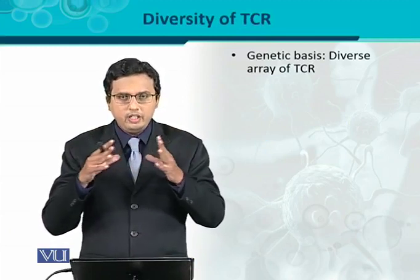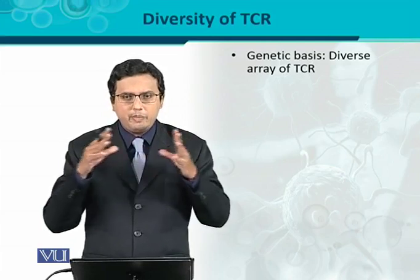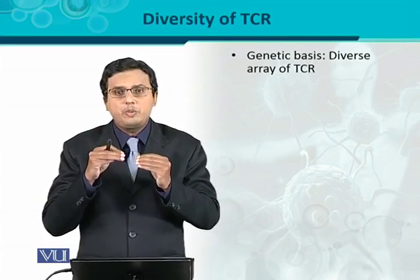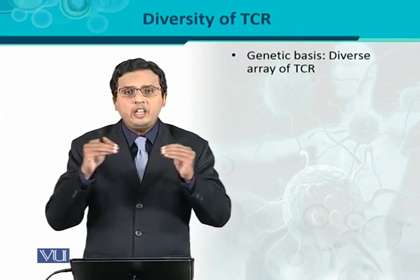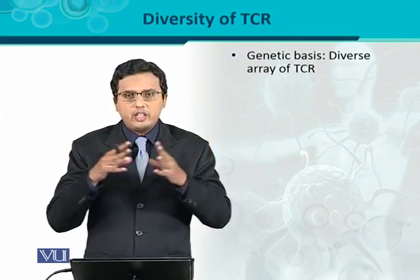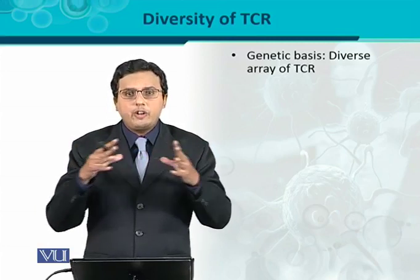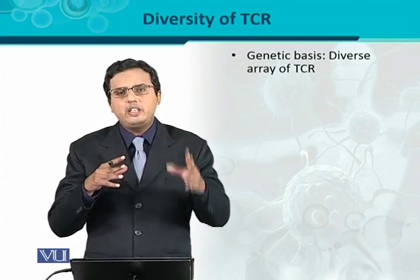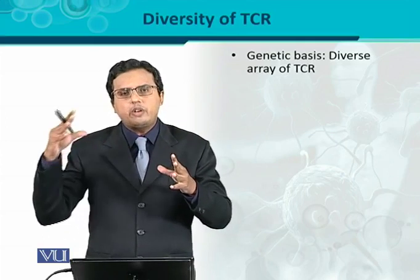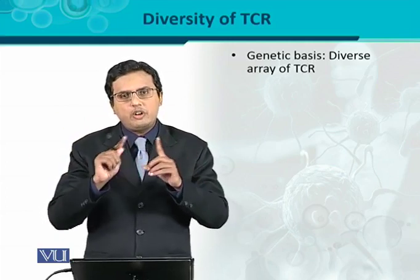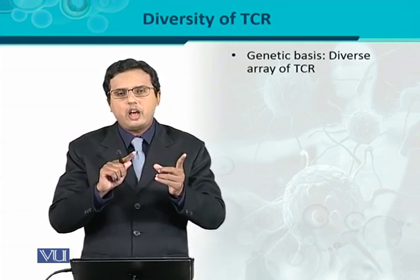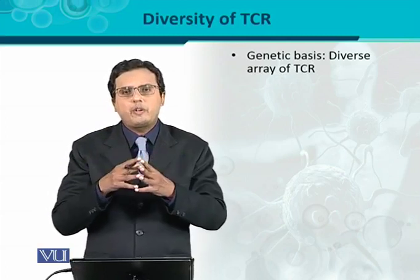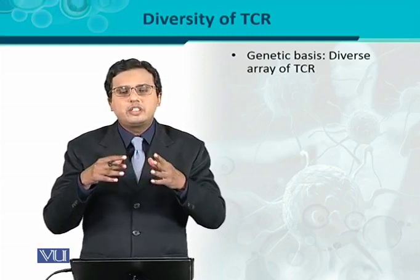Same like the immunoglobulin, in the case of TCR, the joining of various gene segments determines how much diversity the TCR would have. TCRs of different repertoires are going to be originated — one repertoire has the ability to recognize antigen A, and the other has the ability to recognize antigen B. So, the TCR specific for antigen A will not recognize antigen B, and vice versa. That determines the specificity.